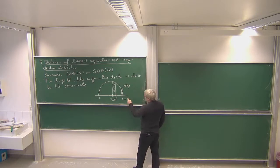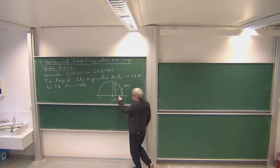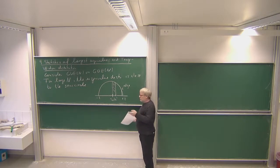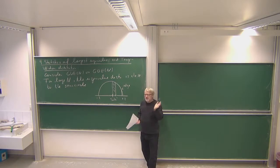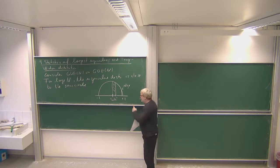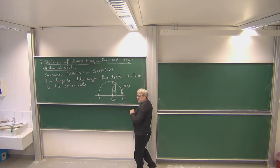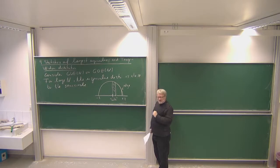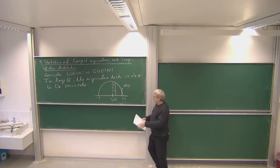The semicircle law tells us the largest eigenvalue cannot go much below 2. It can go above 2, and the semicircle law doesn't prohibit that — each eigenvalue only counts with mass 1/n, so a specific eigenvalue doesn't contribute to the limit. In particular, we want to see that the largest eigenvalue really is very close to 2. The largest eigenvalue also converges to 2, and then we want to zoom in and see how it fluctuates around 2. In the right scaling, this statistics is given by the Tracy-Widom distribution.